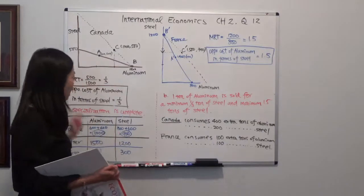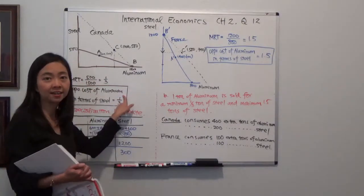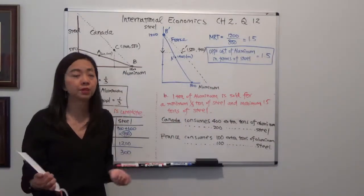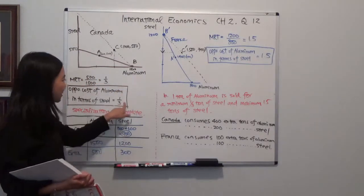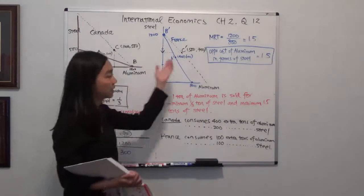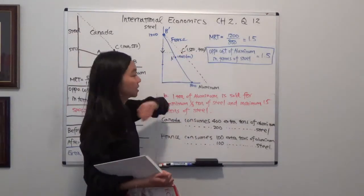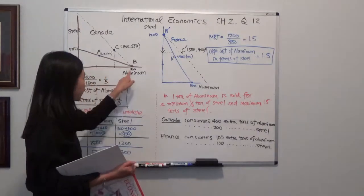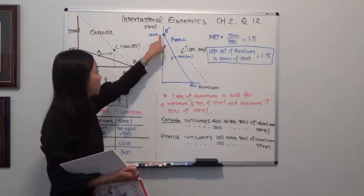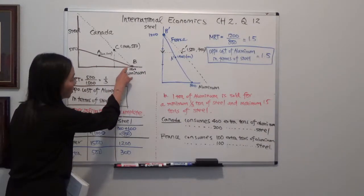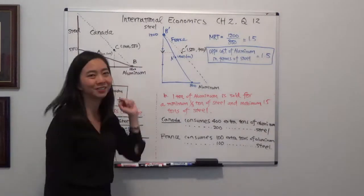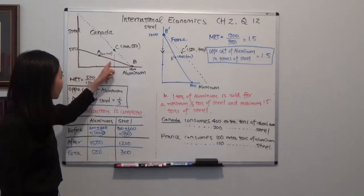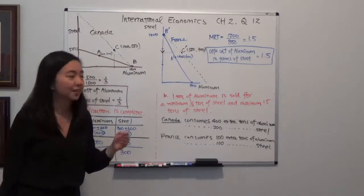The opportunity cost of aluminum is lower in Canada than in France. That tells you Canada has a comparative advantage in the production of aluminum, and it immediately tells you that France has a comparative advantage in the production of steel. We mark their specialization points as B and B prime. Canada will produce only aluminum and France will produce only steel — specialization is complete because we have a constant opportunity cost that does not increase.